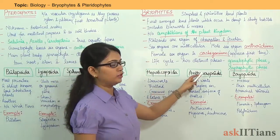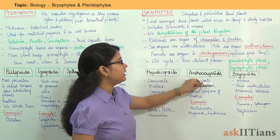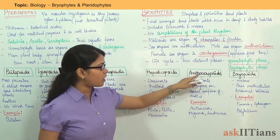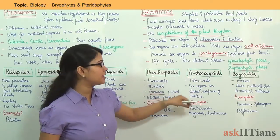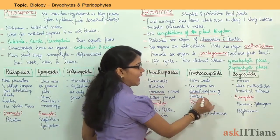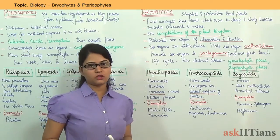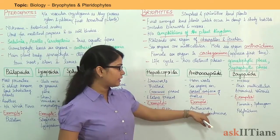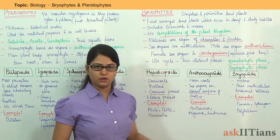Next is Anthocerotopsida. These are the hornworts. The sex organs under Anthocerotopsida are present on the dorsal surface of the thallus. Examples are Anthoceros, Megaceros, and Dendroceros.